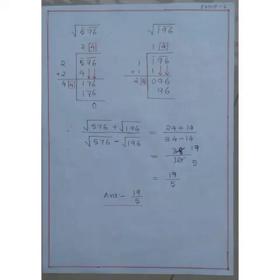If I find the square root of 576, I get 24 as square root of 576. And if we find the square root of 196, the result is 14.